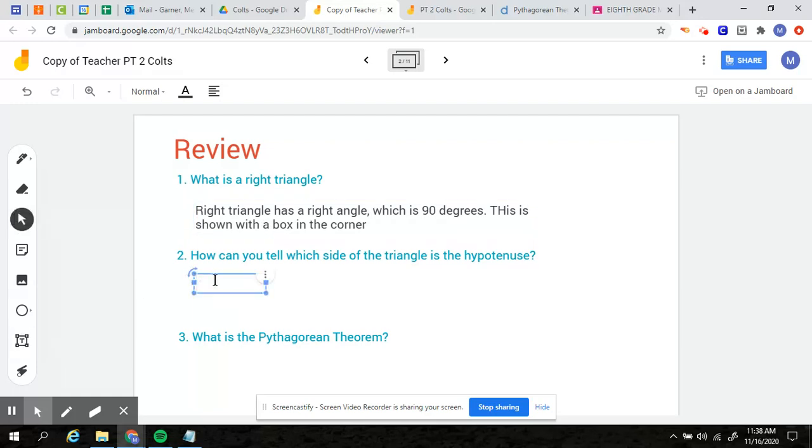The second one, how can you tell which side of the triangle is the hypotenuse? The hypotenuse is the side that is opposite the right angle. So you can think of it, the two legs, A and B, they form your right angle. Those are the two sides that make that box. The hypotenuse does not touch your right angle. So it is opposite from it.